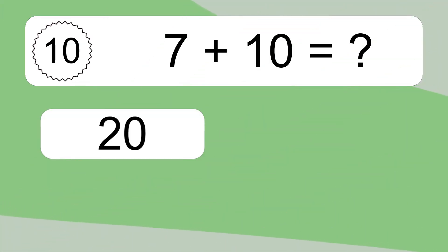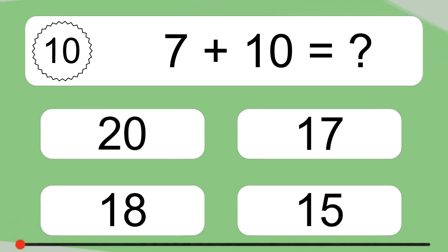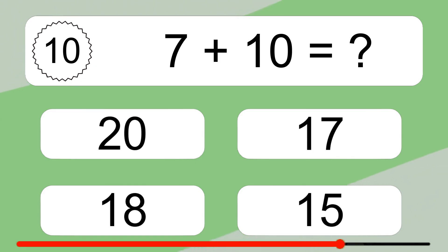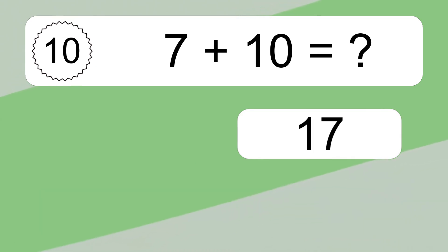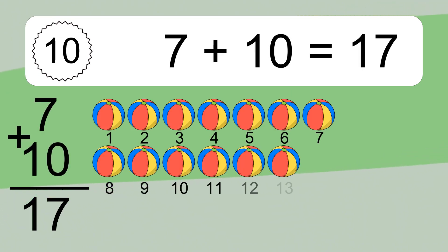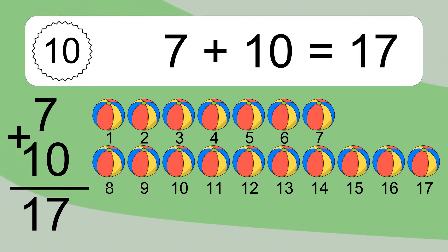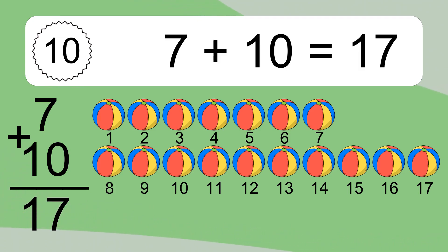7 plus 10 equals what? 7 plus 10 equals 17. Let's count it: 1, 2, 3, 4, 5, 6, 7, 8, 9, 10, 11, 12, 13, 14, 15, 16, 17.